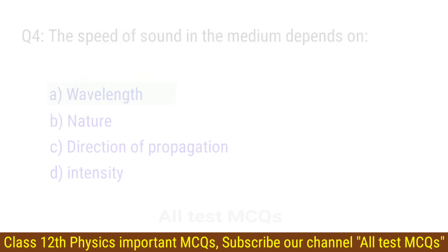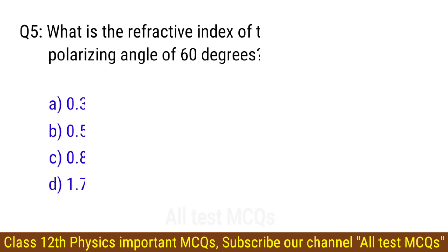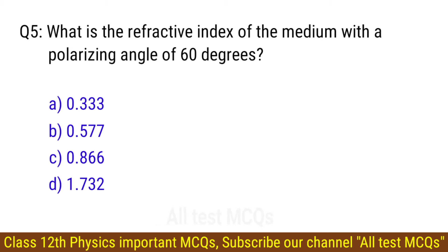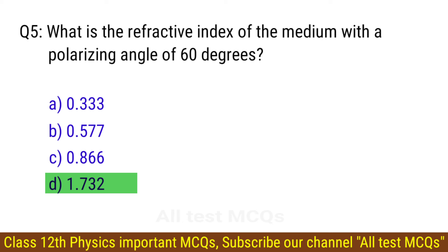Question number 5. What is the refractive index of the medium with a polarizing angle of 60 degrees? The right answer is option D: 1.732.